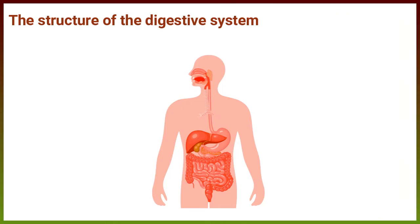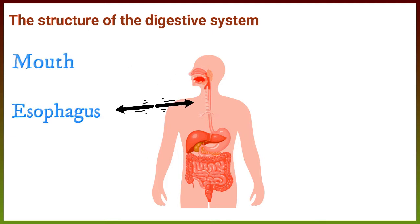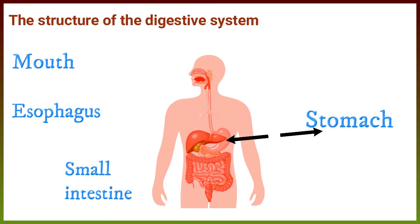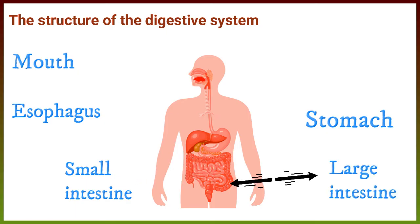The human digestive system consists of some organs: mouth, esophagus, stomach, small intestine, and large intestine.